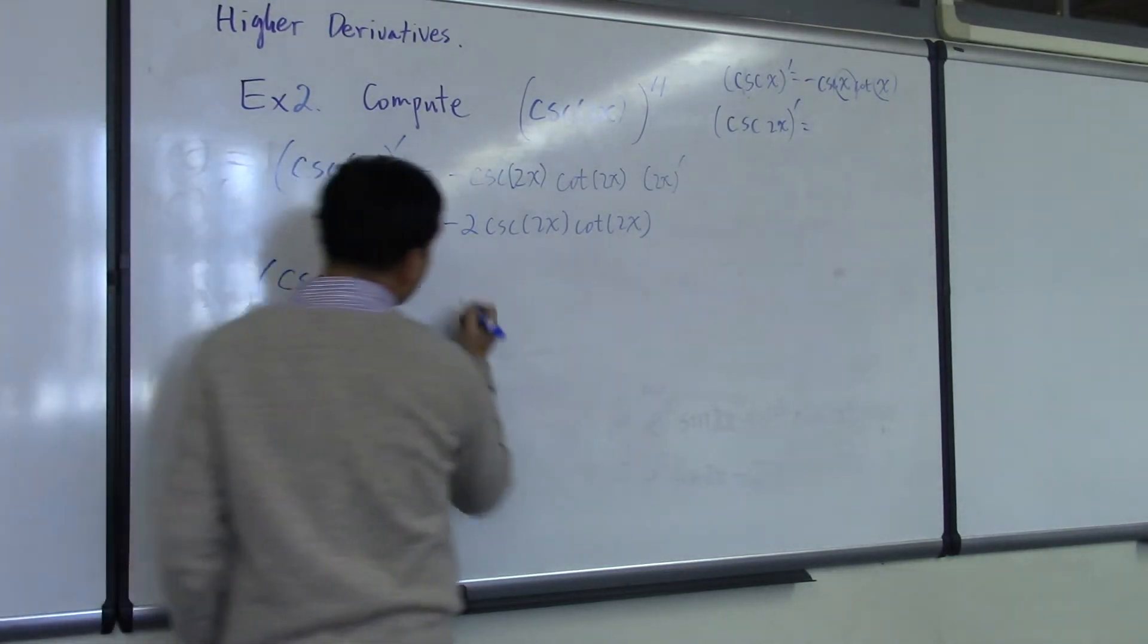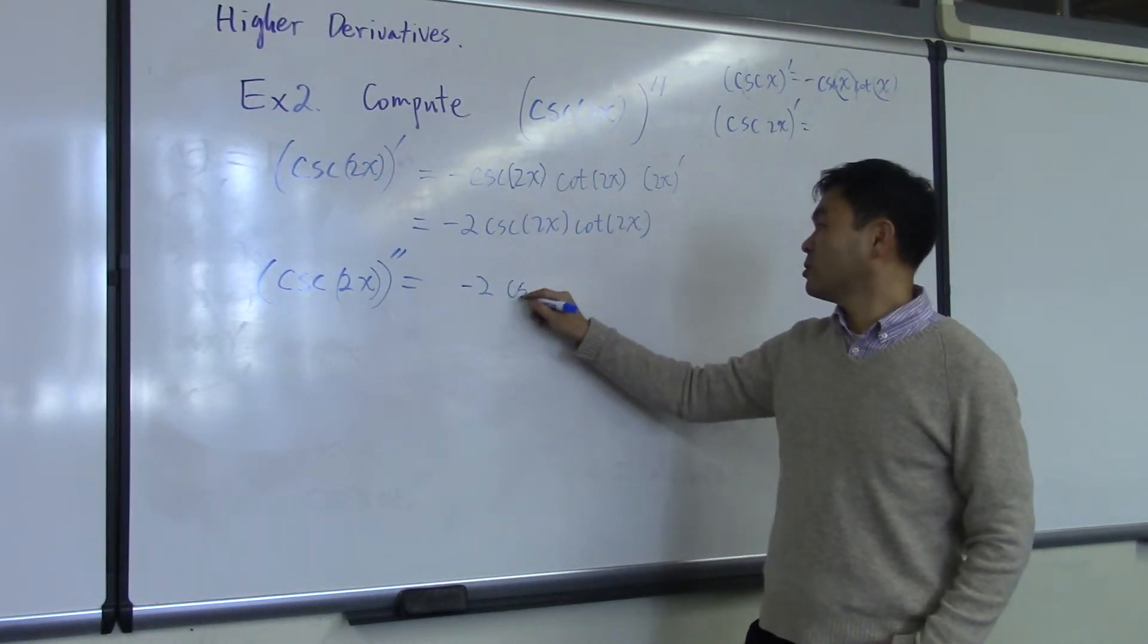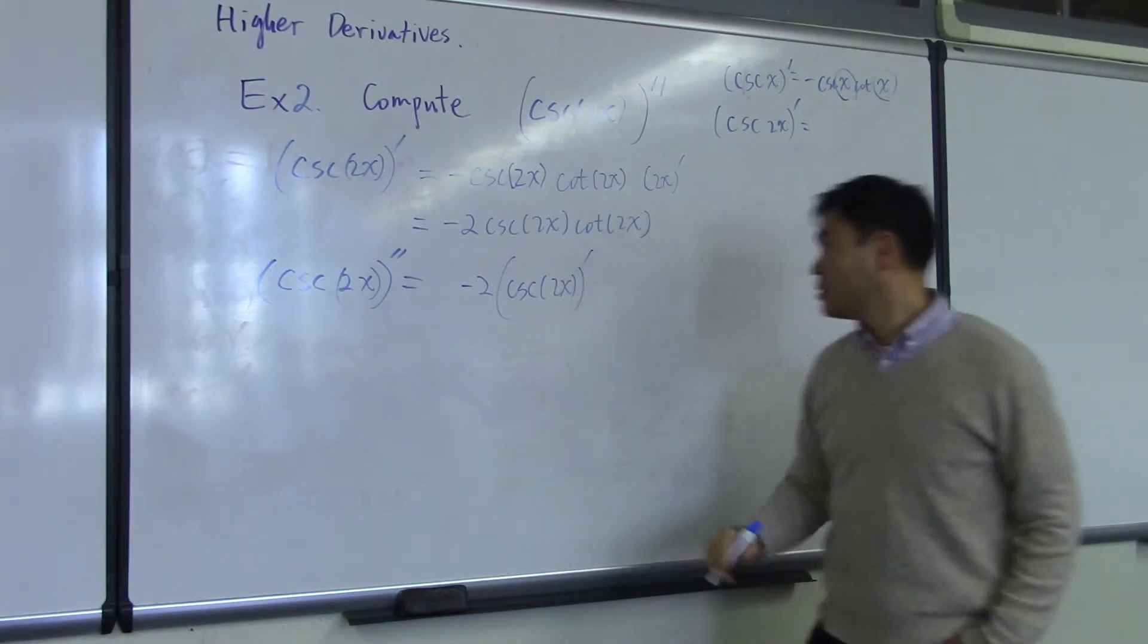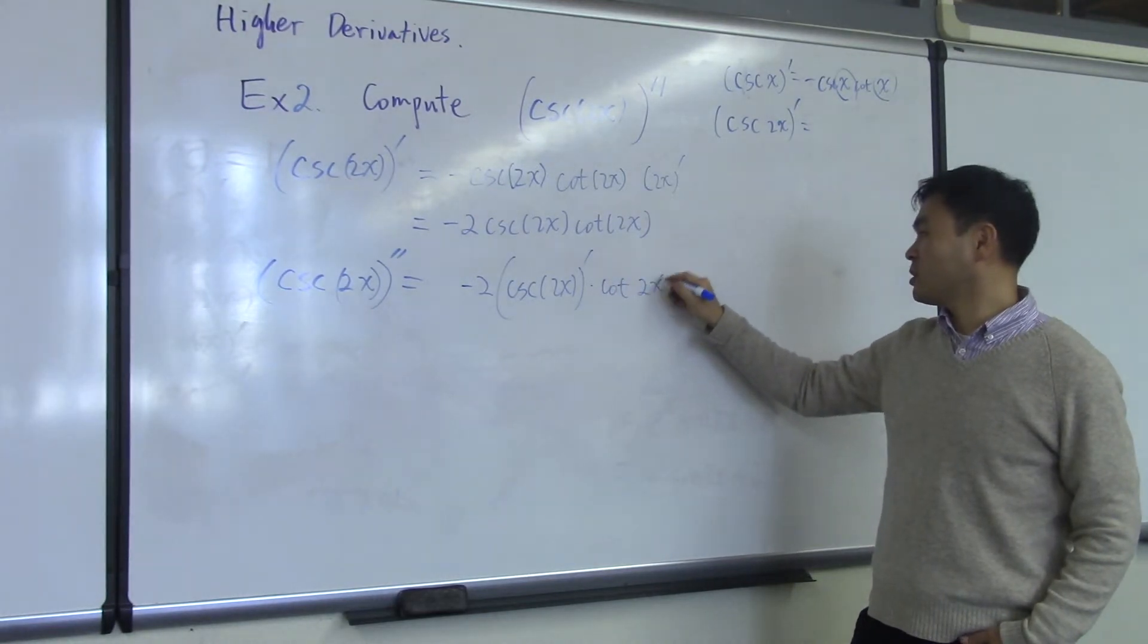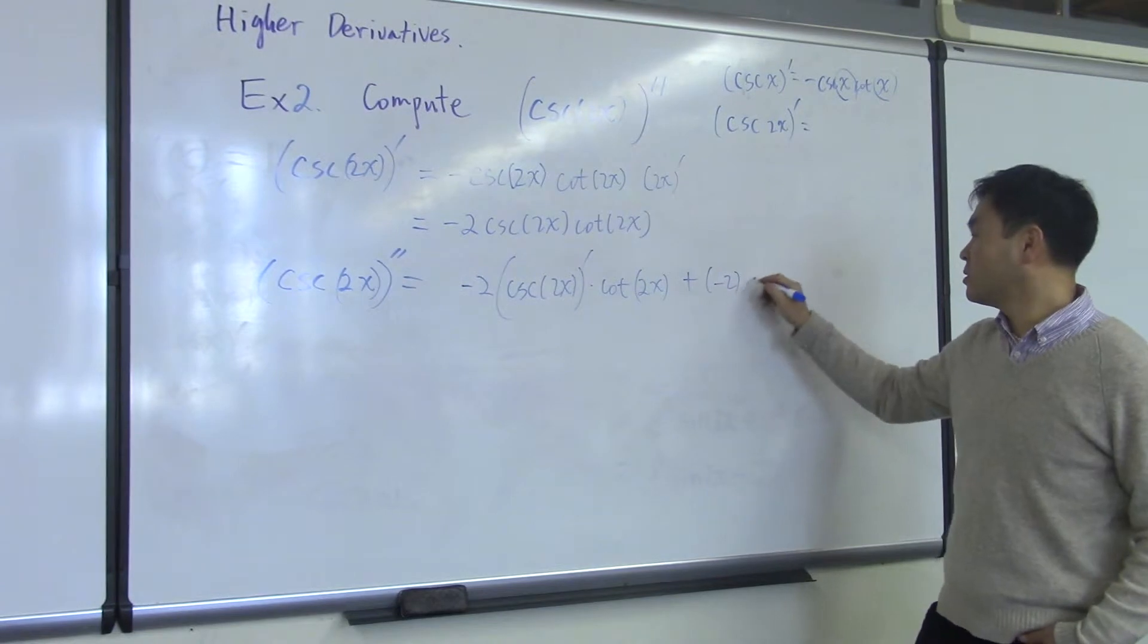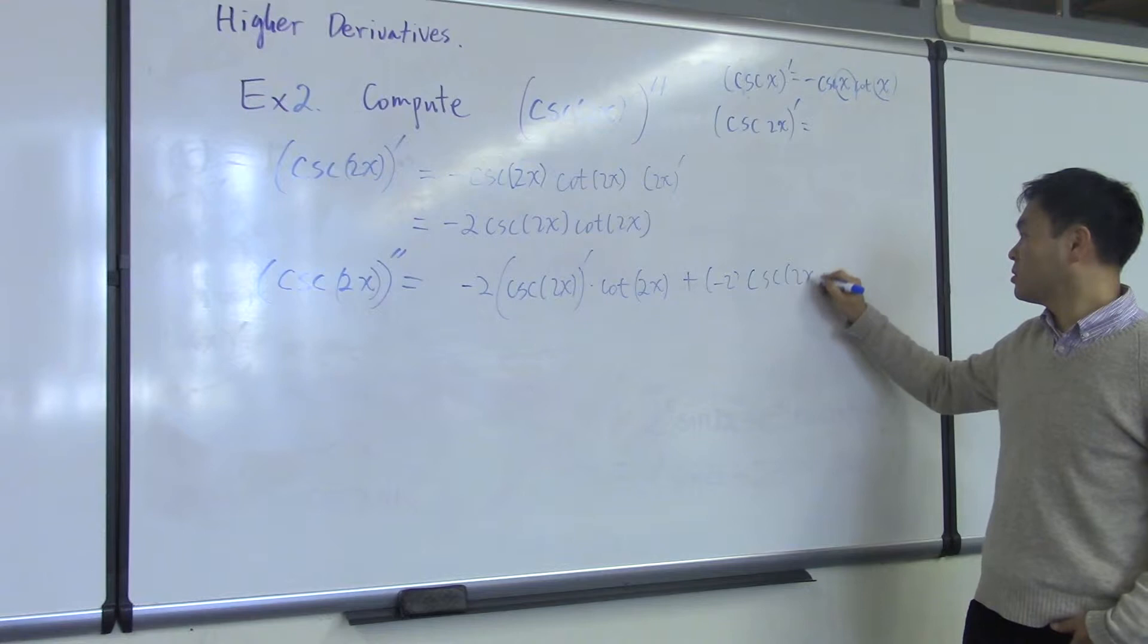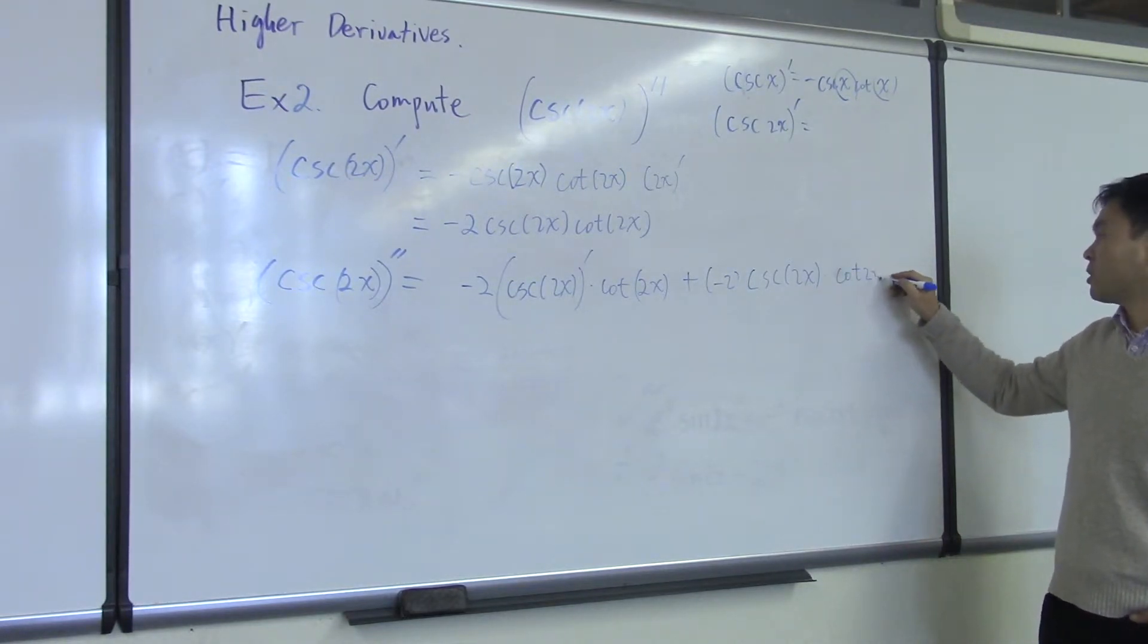Which means you have to differentiate the first one, one times the second one you don't do anything to, plus cosecant of 2x. You differentiate the second one, cotangent of 2x.